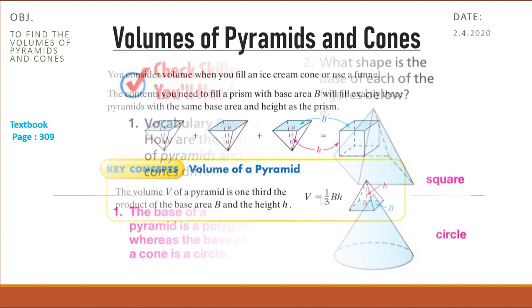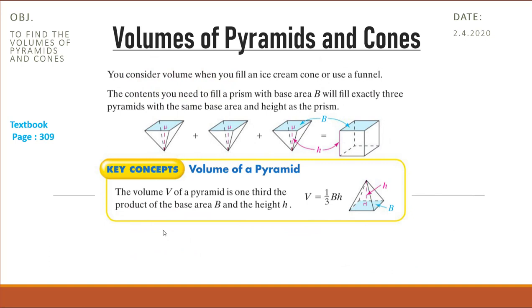Now on the same page, we'll get the main idea in this lesson. You consider a volume when you fill an ice cream cone or use a funnel. The contents you need to fill a prism with base area B will fill exactly three pyramids with the same base area and the same height as the prism. So the volume of a pyramid is one-third the volume of the prism, one-third the product of the base area and the height.